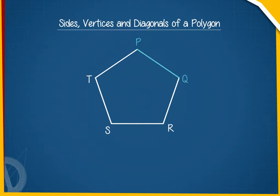PQ and QR, QR and RS, RS and ST, ST and TP are the sides that are next to each other and are called the pair of adjacent sides.